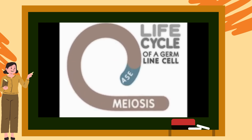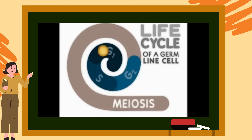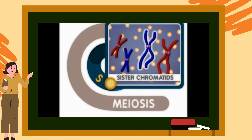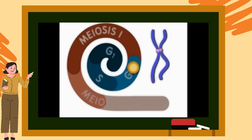In diploid organisms, germline cells have two copies of each chromosome. Germline cells undergo meiosis to produce haploid gametes which only have one copy of each chromosome. These haploid gametes fuse to form a diploid embryo that grows into the adult. Similar to mitosis, the cells also pass through interphase — G1, S and G2 stages — before they enter meiosis. The DNA inside a germline cell is duplicated before meiosis begins. During the S phase, the duplicated germline chromosomes are called sister chromatids.